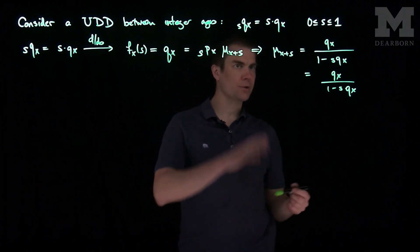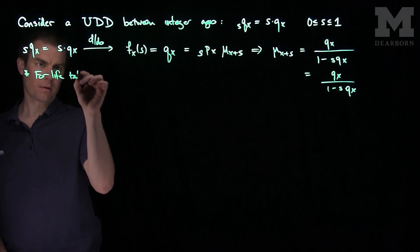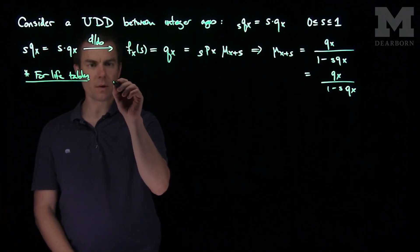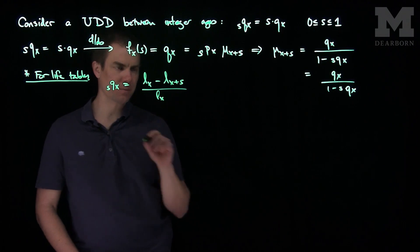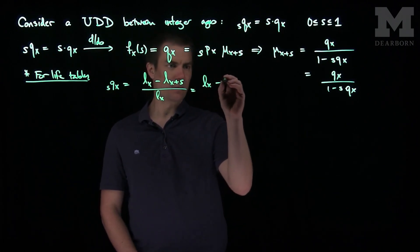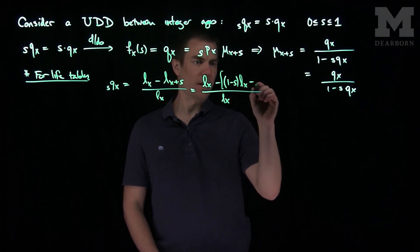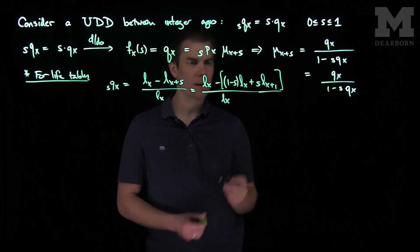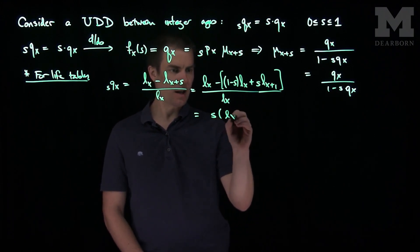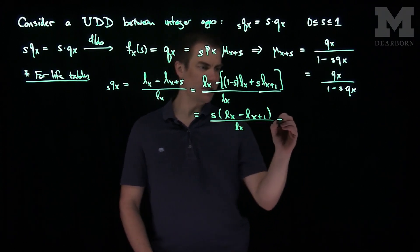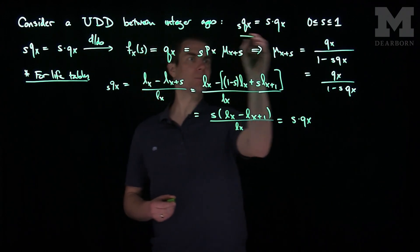One other note is that for life tables, we have that s*q_x equals (l_x minus l_{x+s}) over l_x. Now l_{x+s} under UDD is going to be (1 minus s) times l_x plus s times l_{x+1}. We can simplify this to s times (l_x minus l_{x+1}) over l_x, which is identically equal to s times q_x.